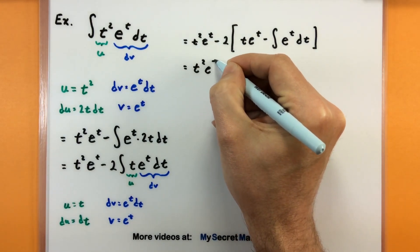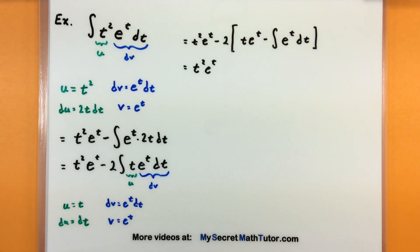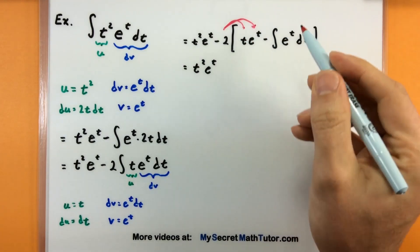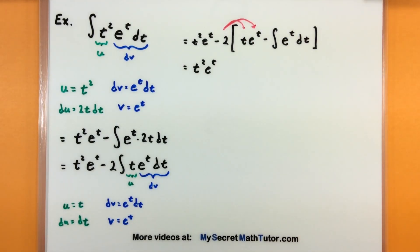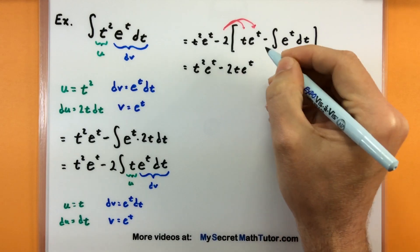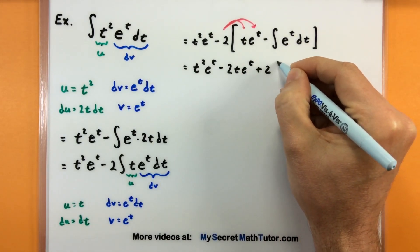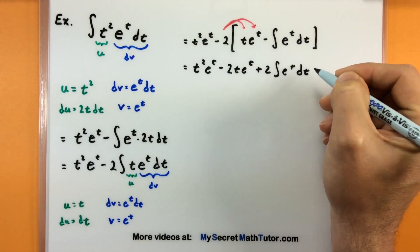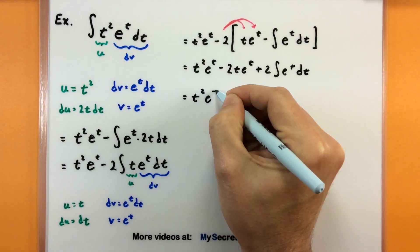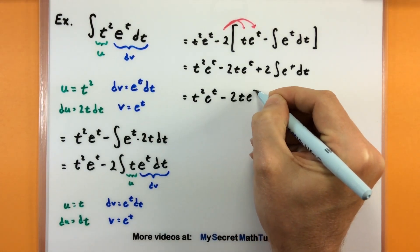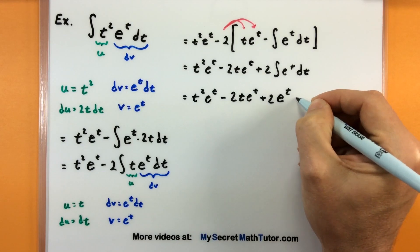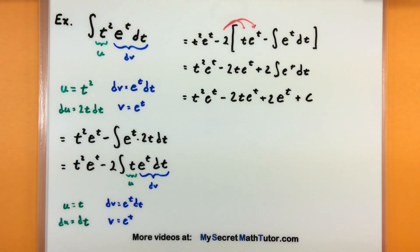Let's clean this up. Distributing the negative 2 inside the parentheses gives negative 2t e to the t plus 2 times the integral of e to the t dt. Now taking care of that final integral: t squared e to the t minus 2t e to the t plus 2, and the antiderivative of e to the t is just e to the t. Throwing on the constant of integration and this is done.